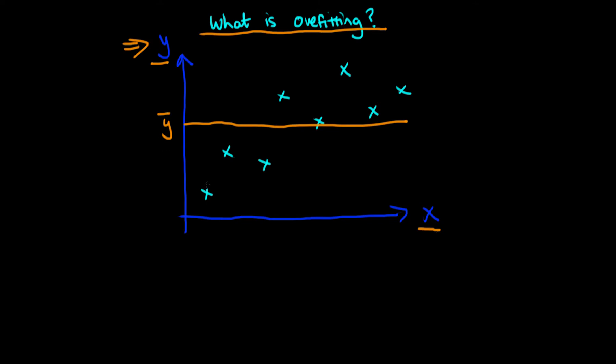But it looks like we could do slightly better than just predicting the sample mean of y if we take the variation in x into account. So what we could do is fit a linear model indicated here by a sort of pink line.